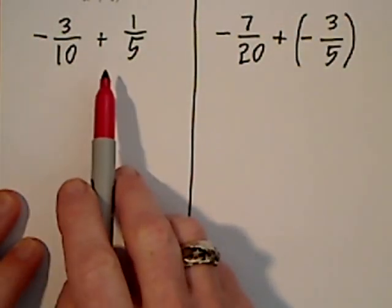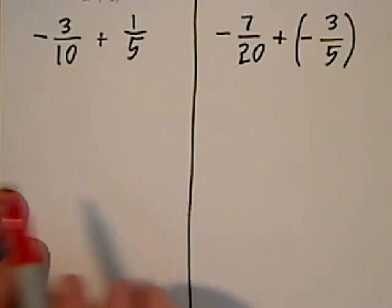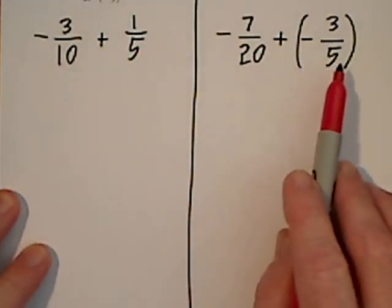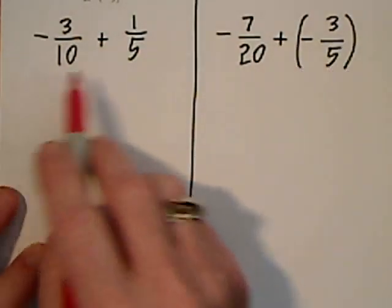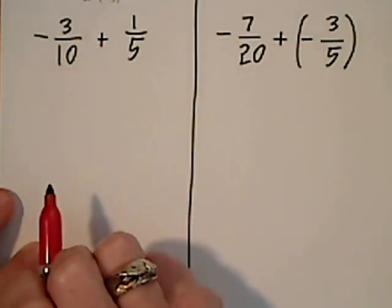First I'll solve the problem on the left. It's a little bit less complicated. Then I will solve the one on the right. Looking at this, we have two different denominators.